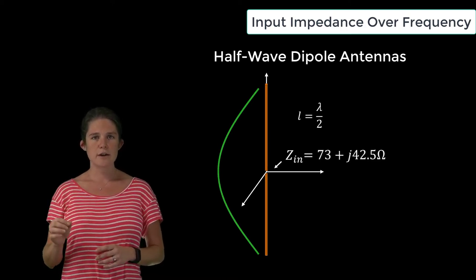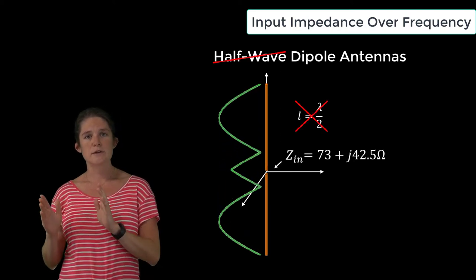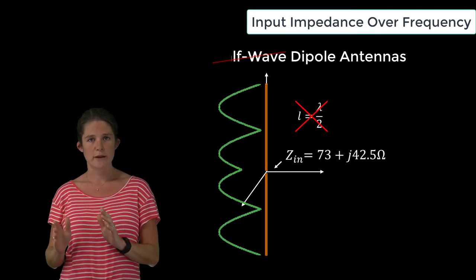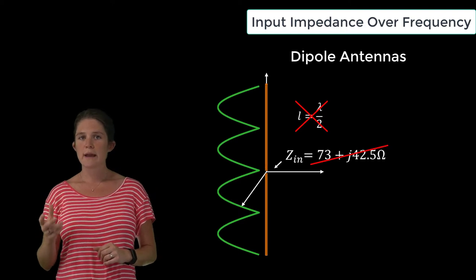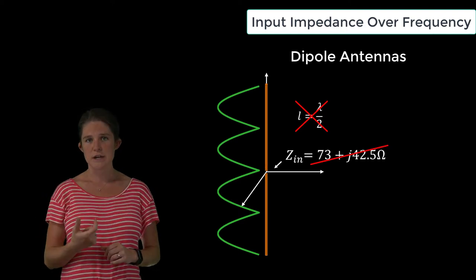However, if the driving frequency changes so that the antenna length is no longer equal to half a wavelength, both the real and imaginary parts of the input impedance change.